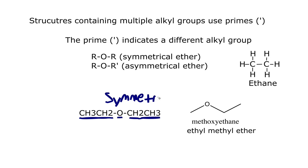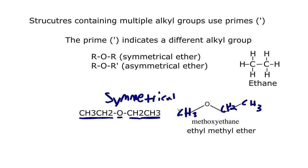In the next one, we have an asymmetrical ether, indicating that the R prime group is just a different alkyl group. Here we have ethyl methyl ether. This oxygen is connected to a methyl group — that is a CH3. However, on the other side, the oxygen is connected to a CH2, which is connected to a CH3. As you can see, the R groups are different on each side: we have a methyl group on one side and an ethyl group on the other.